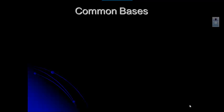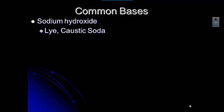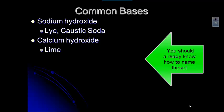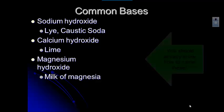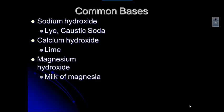Here are some common bases. The nice thing is these all follow our nomenclature rules, so you don't have to learn anything new — just recognize them. Sodium hydroxide is one; you may have heard of lye soap, and lye is also known as sodium hydroxide or caustic soda. Calcium hydroxide is lime — not the fruit, but the substance you put on soil to change its acidity, also used to make limewater. Magnesium hydroxide is milk of magnesia, an antacid product.